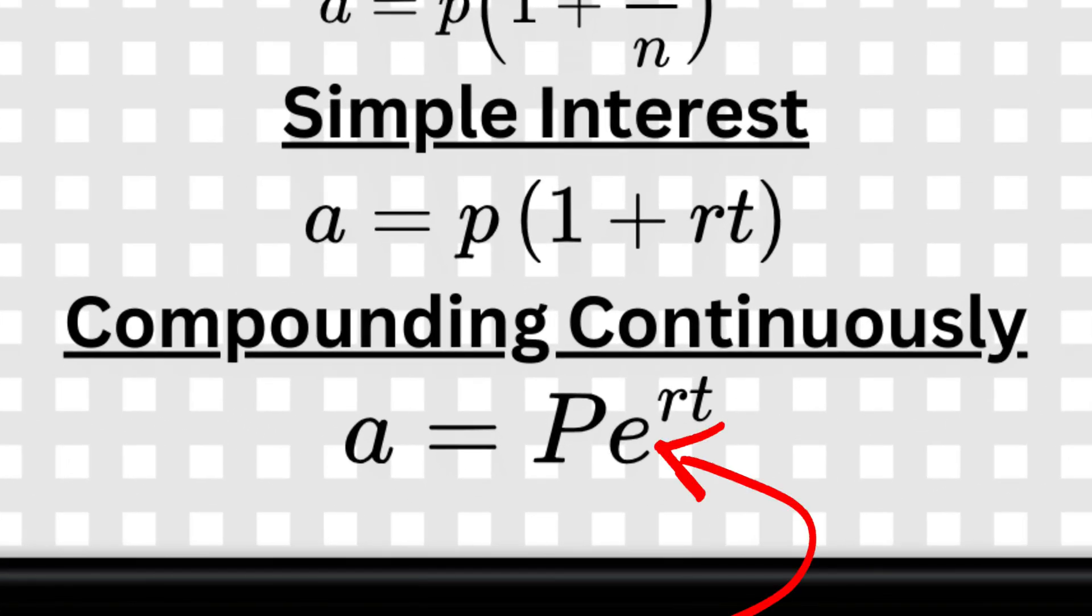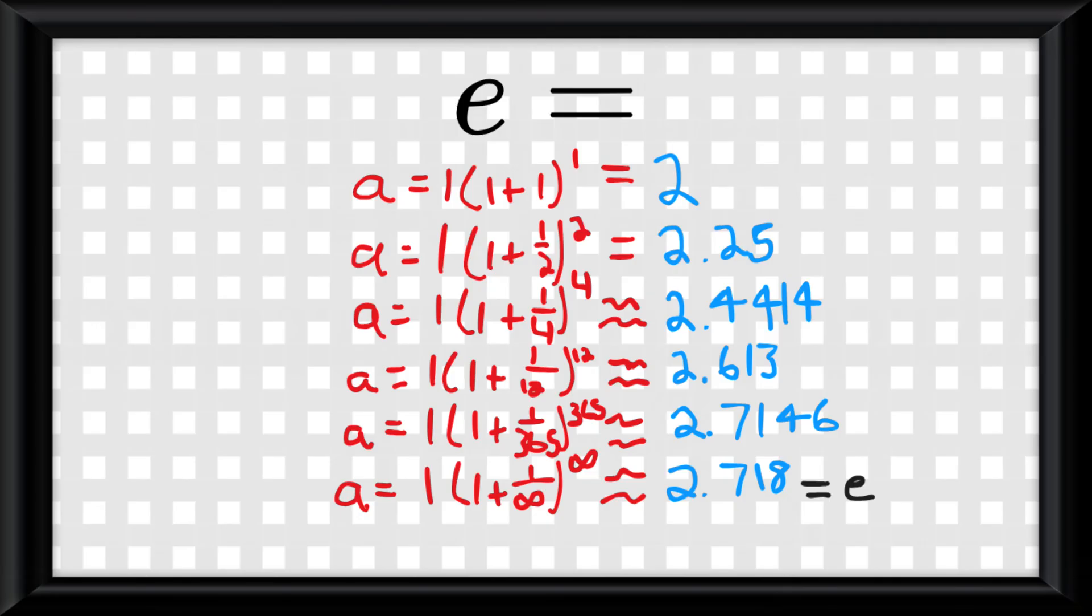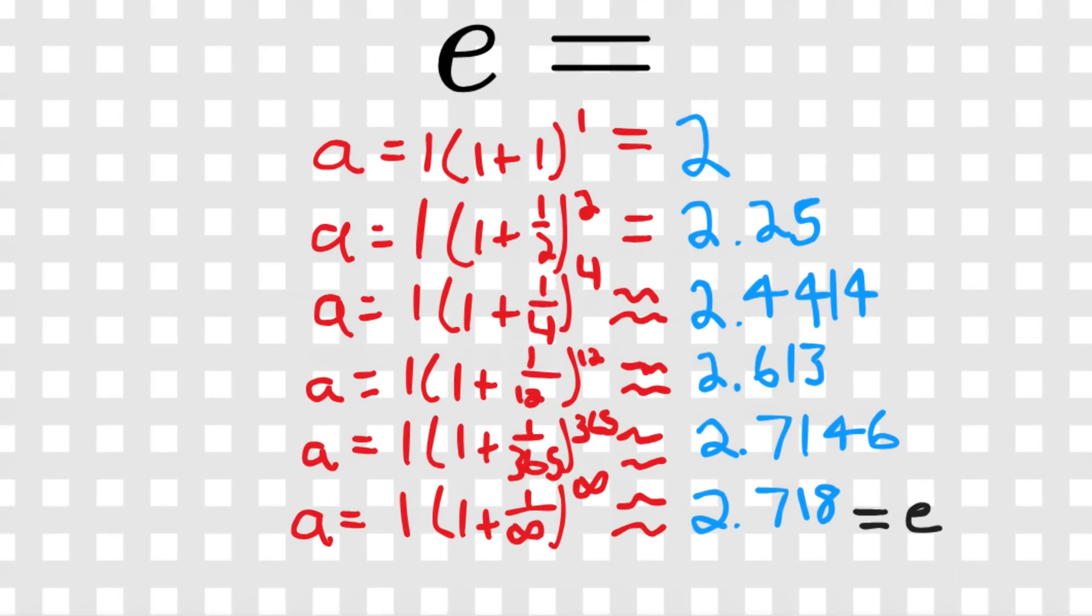Like continuously compounded interest. Unlike regular growth factors, E is special because it allows us to model processes that change at a rate proportional to their current value. E is a complex topic and takes a while to understand, but it's not that crucial to understand for the AP exam.